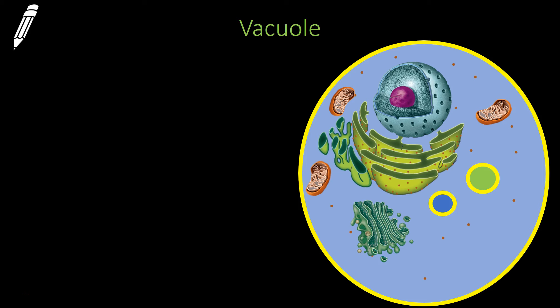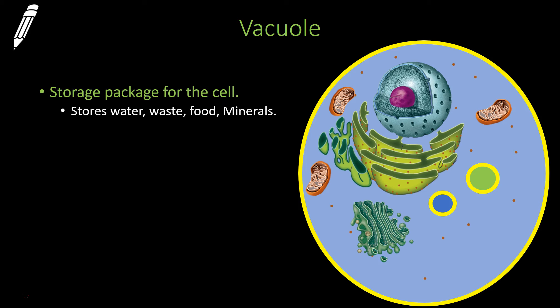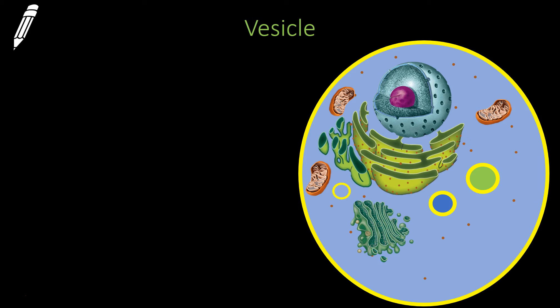Next we have a vacuole. A vacuole is essentially just a storage compartment — it could store water, waste, food, or minerals for later use by the cell. One thing to keep in mind is animal cells have very small vacuoles; when we talk about plant cells later, plant cells have a very large vacuole to store lots of water. Think of a vacuole as a storage package. Next we have a vesicle, which is very similar to a vacuole but much smaller and used to transport materials. A vacuole is for storage; a vesicle is for transport.